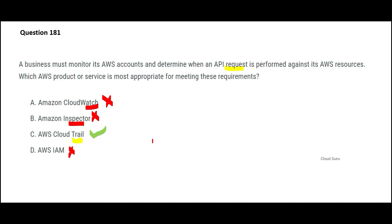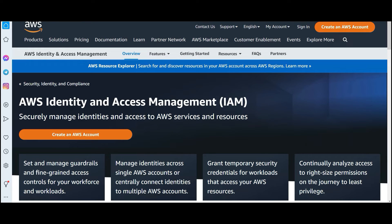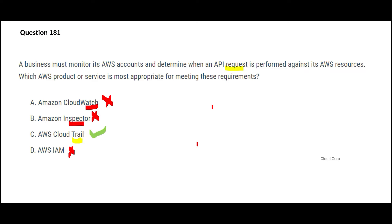IAM is used for providing authentication services and access — it helps you manage identities and access to AWS services and resources. In your office, a department provides access on your ID cards; IAM is similar to that. So CloudTrail is my final answer for tracking API activities.